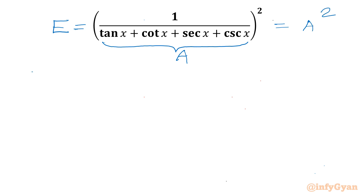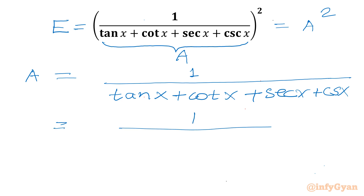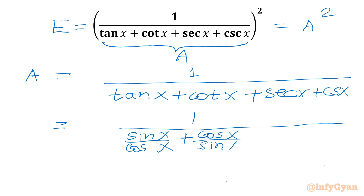Let me write A separately. A will be equal to 1 over (tan x + cot x + sec x + cosec x). Now we know that tan is sin over cos. So tan x = sin x / cos x, cot x = cos x / sin x, sec x = 1 / cos x, and cosec is the reciprocal of sin.